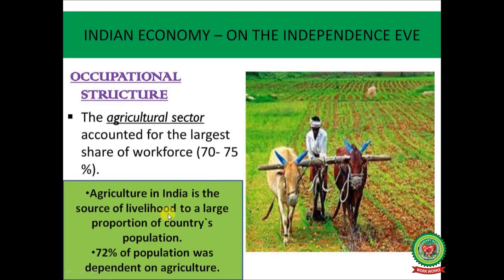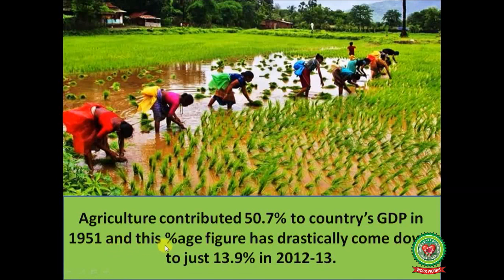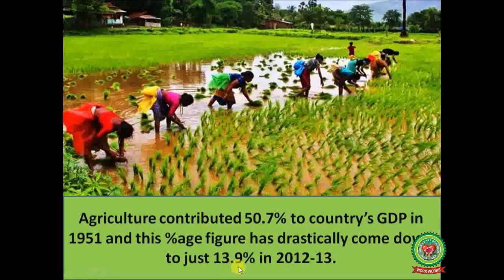Agriculture in India is a source of livelihood for a large proportion of the country's population — 72 percent of the population was dependent on agriculture. Agriculture contributed 50.7 percent to the country's GDP in 1951, and this percentage figure has drastically come down to just 13.9 percent in 2012–13.